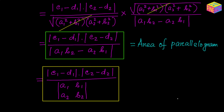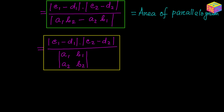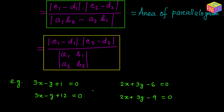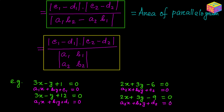The denominator can also be written as the determinant |A₁ B₁; A₂ B₂|, which equals A₁B₂ − A₂B₁. So an alternative form of the area formula is: Area = |C₁ − D₁| × |C₂ − D₂| over |A₁ B₁; A₂ B₂|. Both forms are the same — whichever is easier to remember, you can use either. To apply the formula you just need to identify A₁, B₁, C₁, D₁ and A₂, B₂, C₂, D₂ from the given equations.